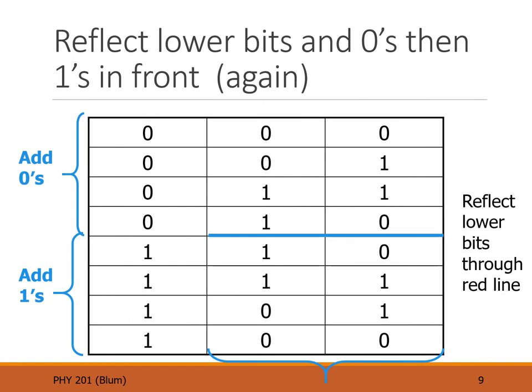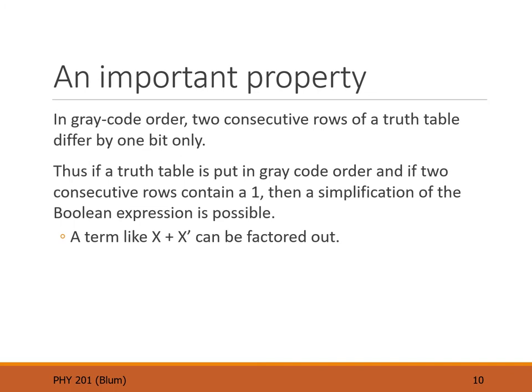We can repeat this process for additional columns. Now we have two columns of gray code — the middle and the right — with four rows. We then reflect that again: the fourth row was the closest to the mirror, and in the reflection the fifth row is also closest. In front of the original four rows we add zeros, and in the final four rows we add ones, again reproducing the gray code property that only one bit changes from row to row.